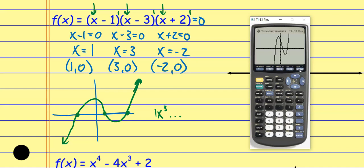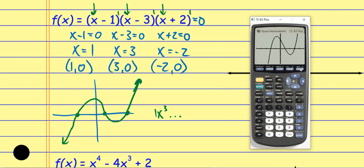Depending on what I see, I might have to adjust the graph a little bit. Using the zoom buttons is typically not very great. If I want to reset the graph, I'll go into Zoom and go to Zoom Standard. Otherwise I'm going to go to Window and adjust it by hand. Right now I'm at Zoom Standard, which is 10 in each direction. I'm going to adjust the window to go from negative five to positive five so I can see a little bit clearer.